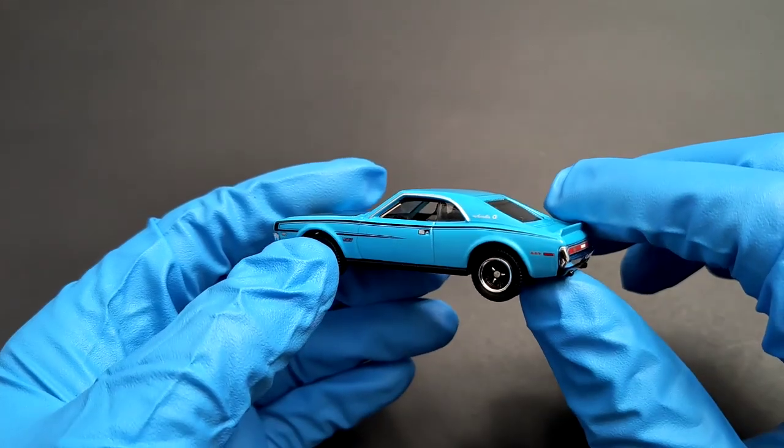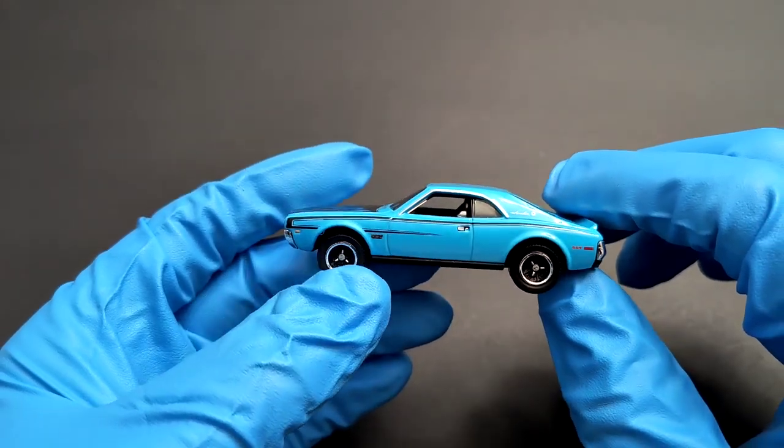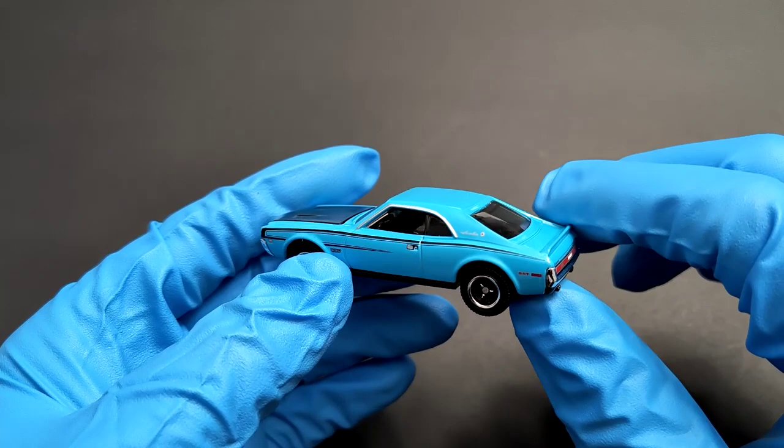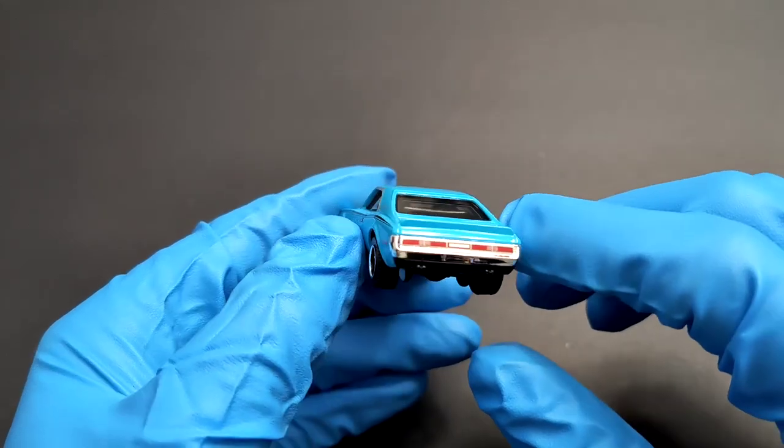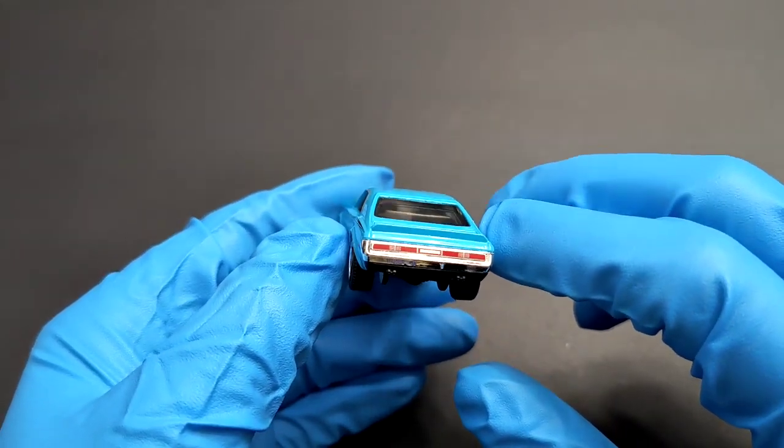Now moving to the back, there's a small spoiler as you can see on the trunk, detailed tail lamps, and a chrome bumper.